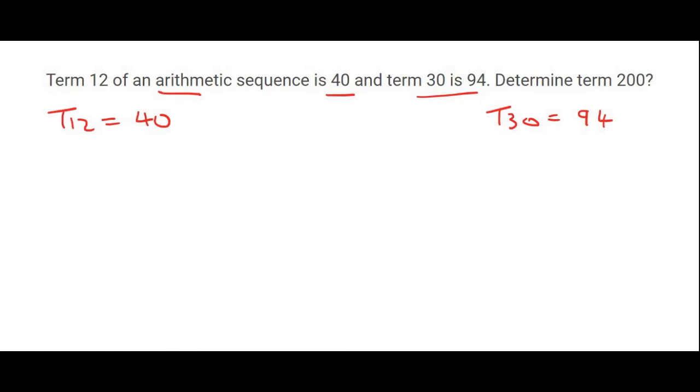I then need my arithmetic formula and then I just plug everything in. So I could say 40 is equal to a plus (12 minus 1) times d. That would be my first one, and then I can simplify. So that'll be 40 is equal to a plus 11d.